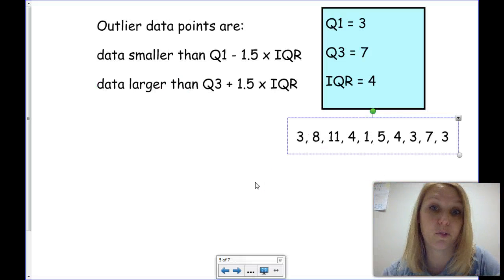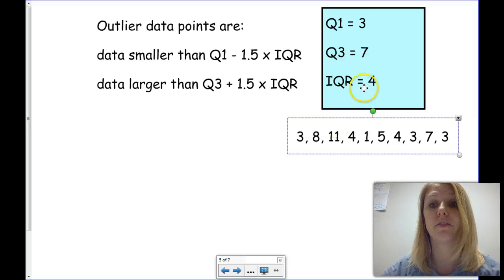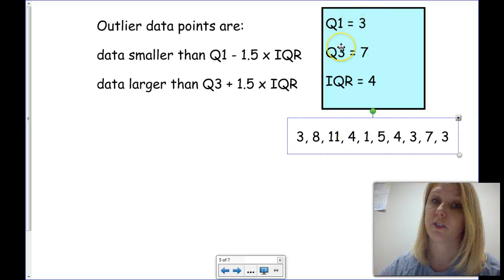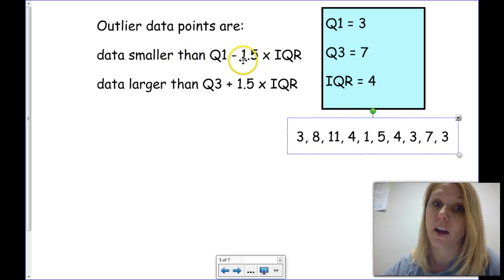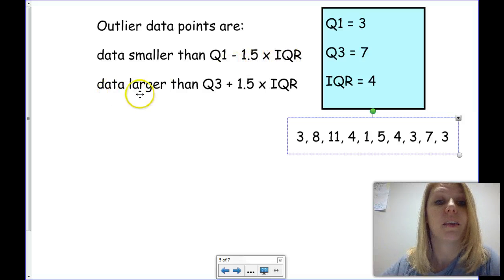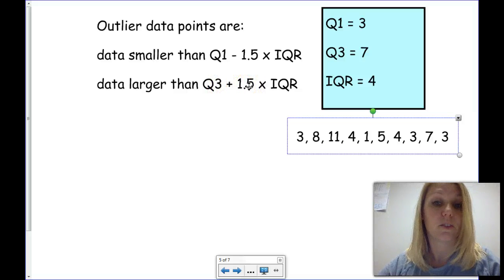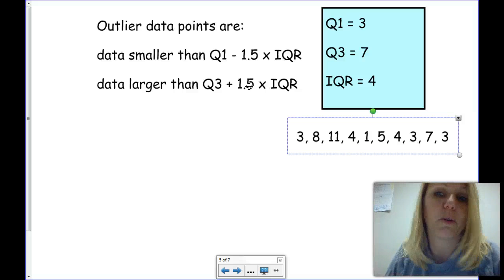On the screen before, we found that we had a first quartile of 3, a third quartile of 7, and an IQR of 4. We're going to put these into a formula, as seen right here. Outlier data points are found by finding any data that is smaller than the first quartile minus 1.5 times the IQR, or any data that is larger than the third quartile plus 1.5 times the IQR. So, let's find if we have any of those data points.